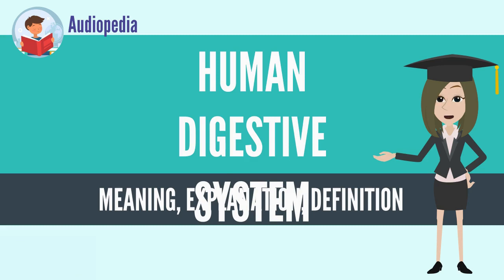From the stomach, the bolus passes into the duodenum, where it is mixed with a number of enzymes produced by the pancreas. Saliva also contains a catalytic enzyme called amylase, which starts to act on food in the mouth.